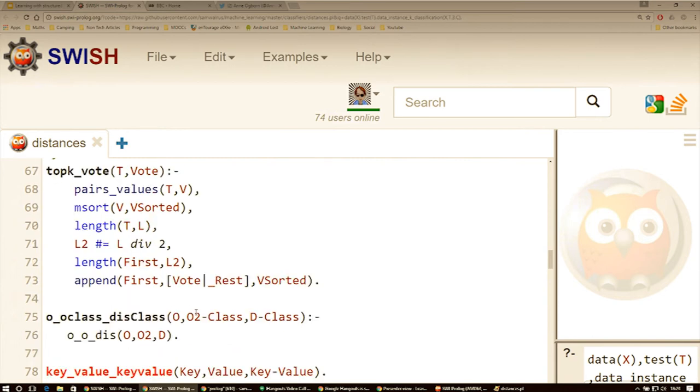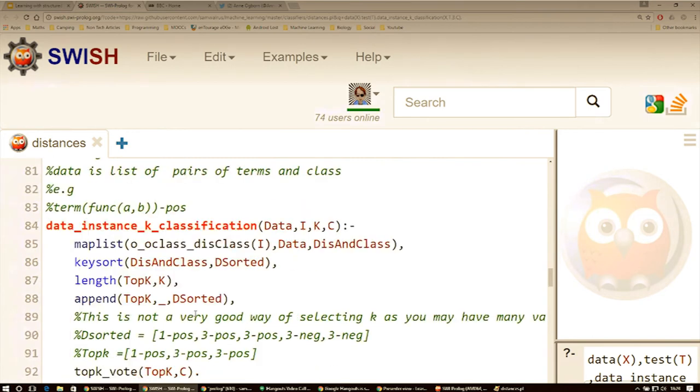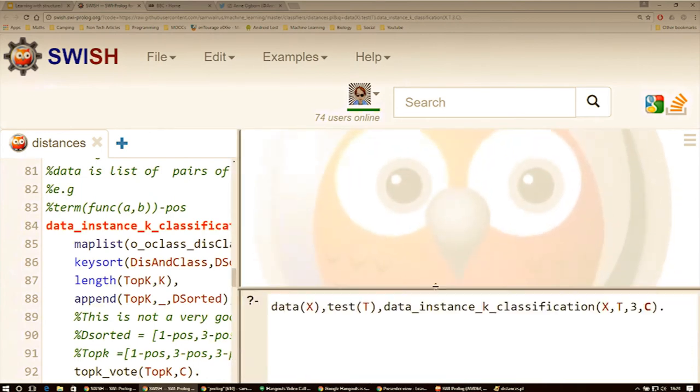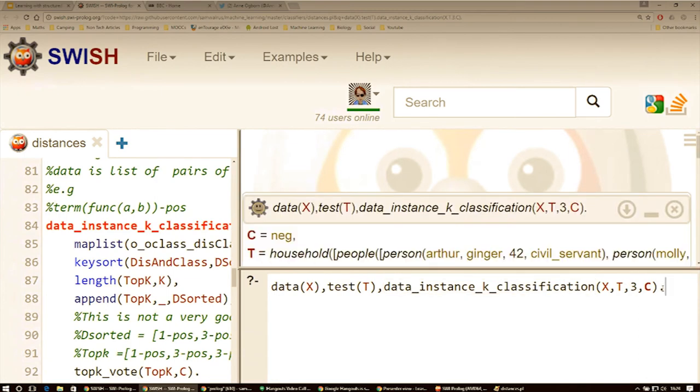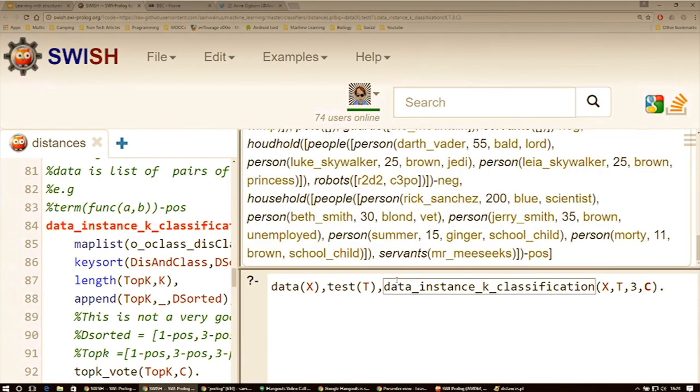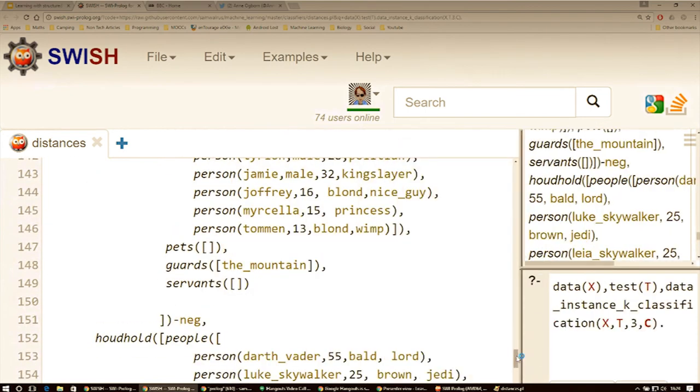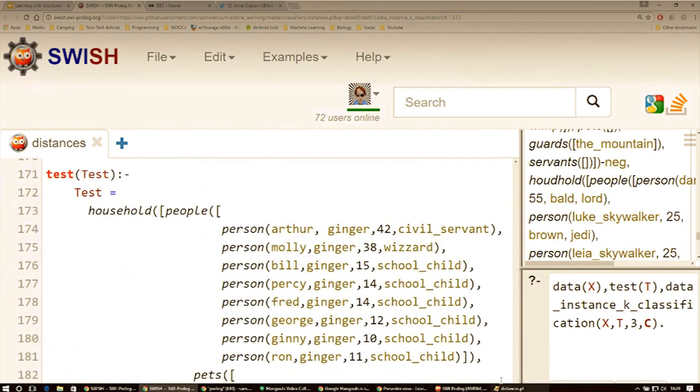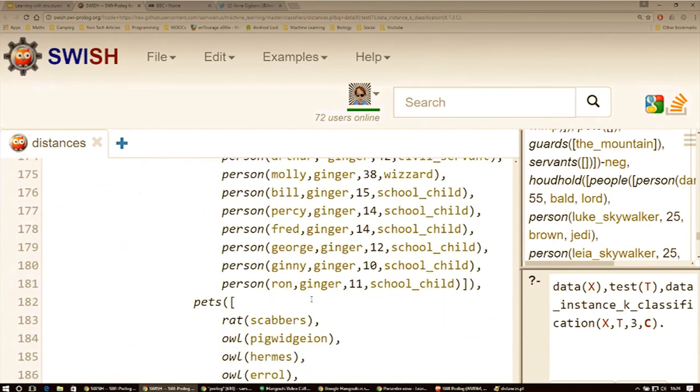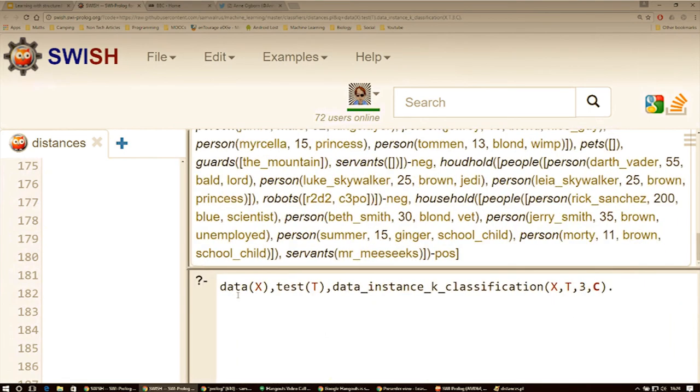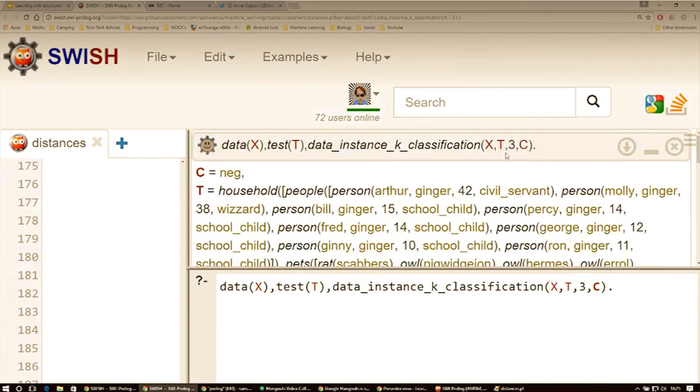And that is all that is to k-nearest neighbor in Prolog. So if we run a query, we're fine. So our test instance that we had, let's just look at our test instance, is the Weasley family from Harry Potter. We've got lots of owls. And we've just queried the data, the test, and then the relation. And if we look at c, which is our answer, with k equals three, we've found that they are negative.